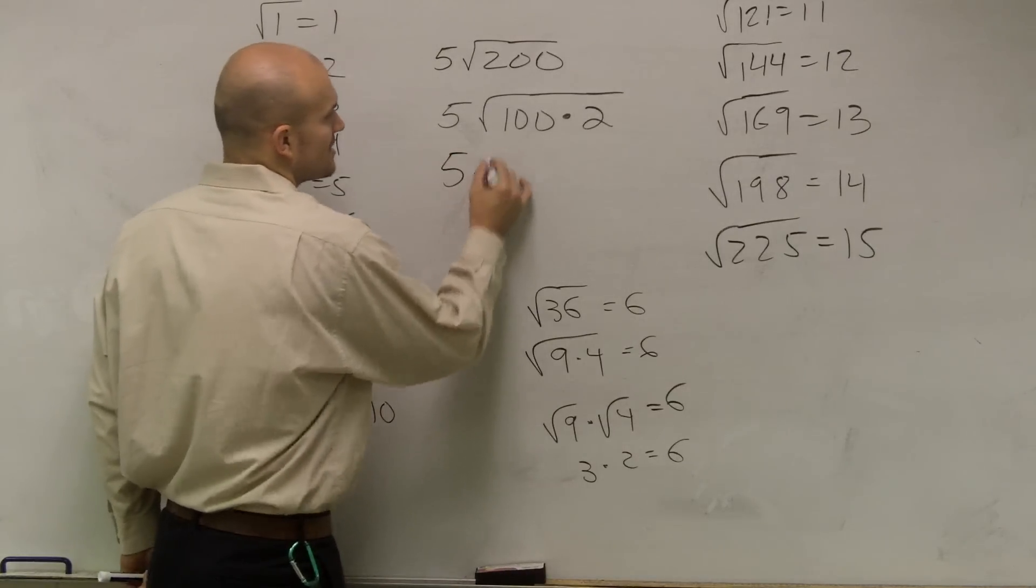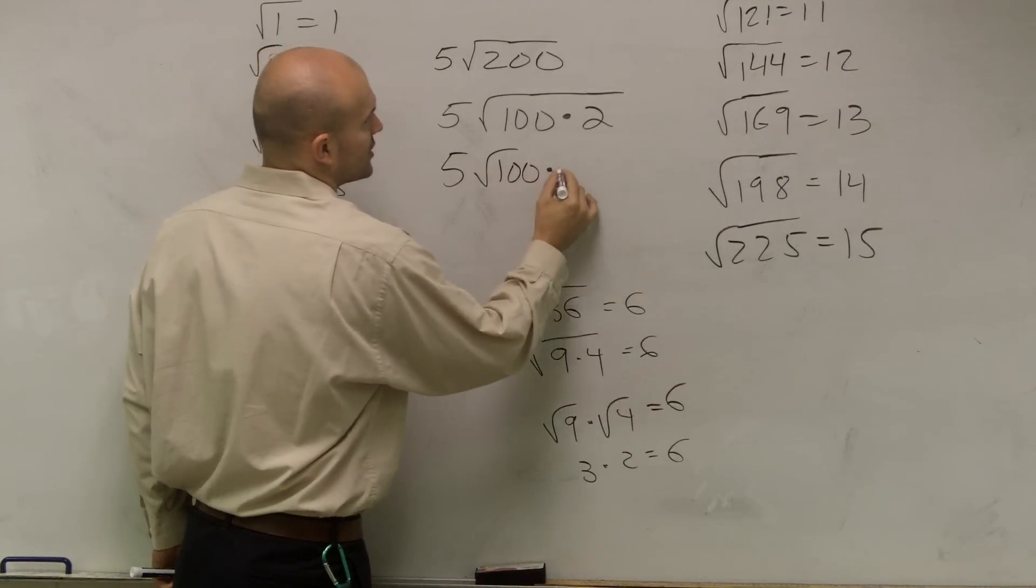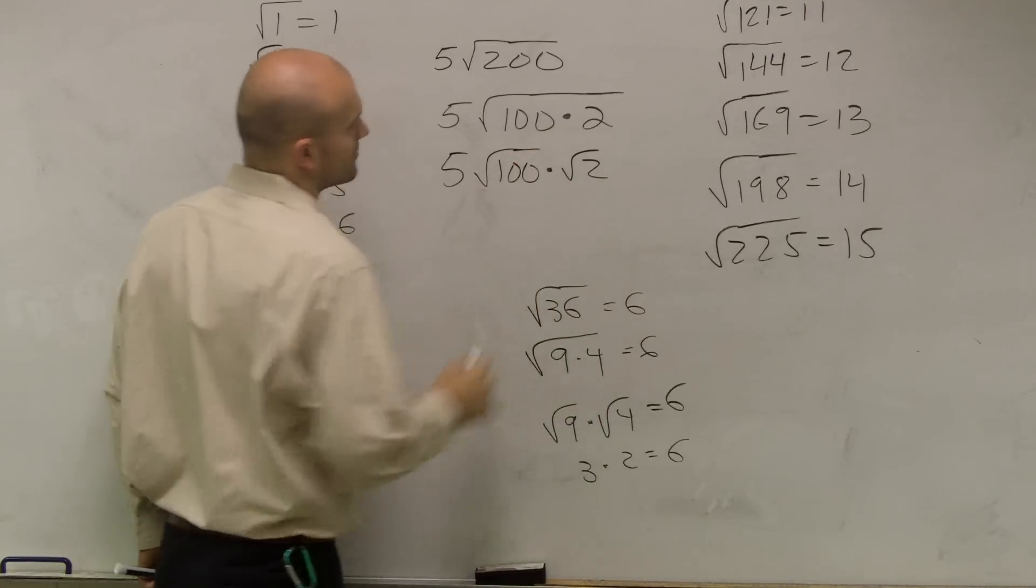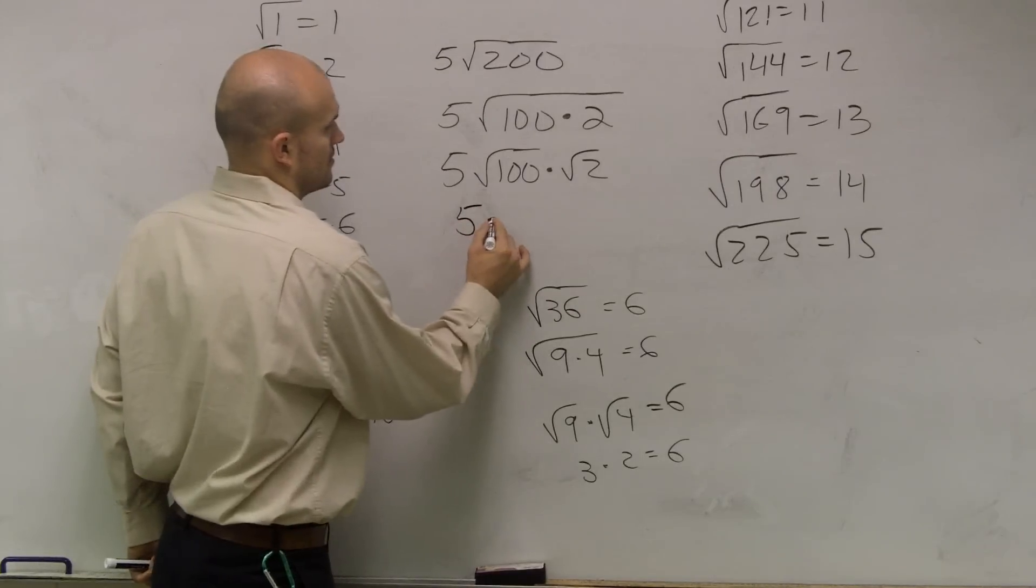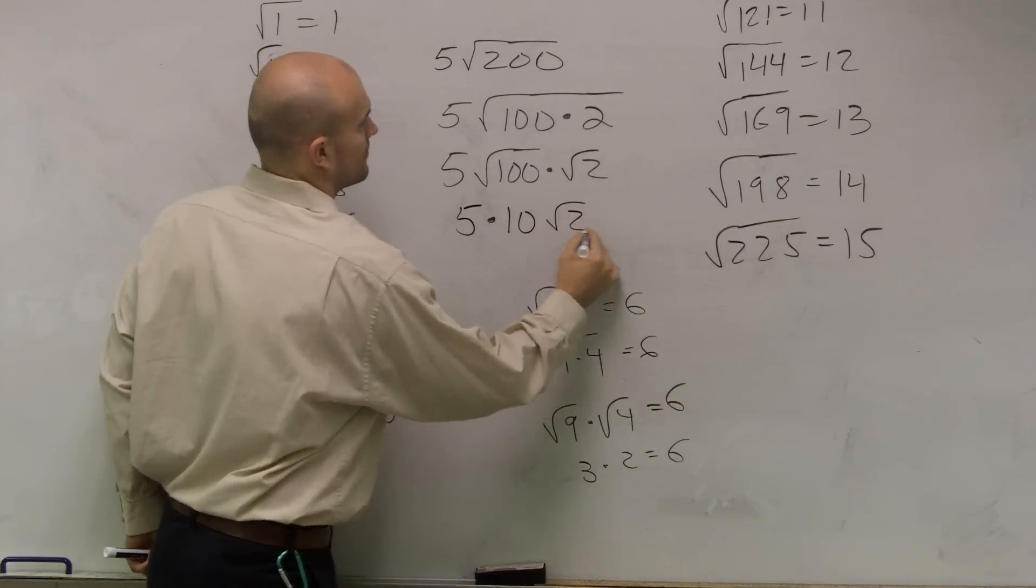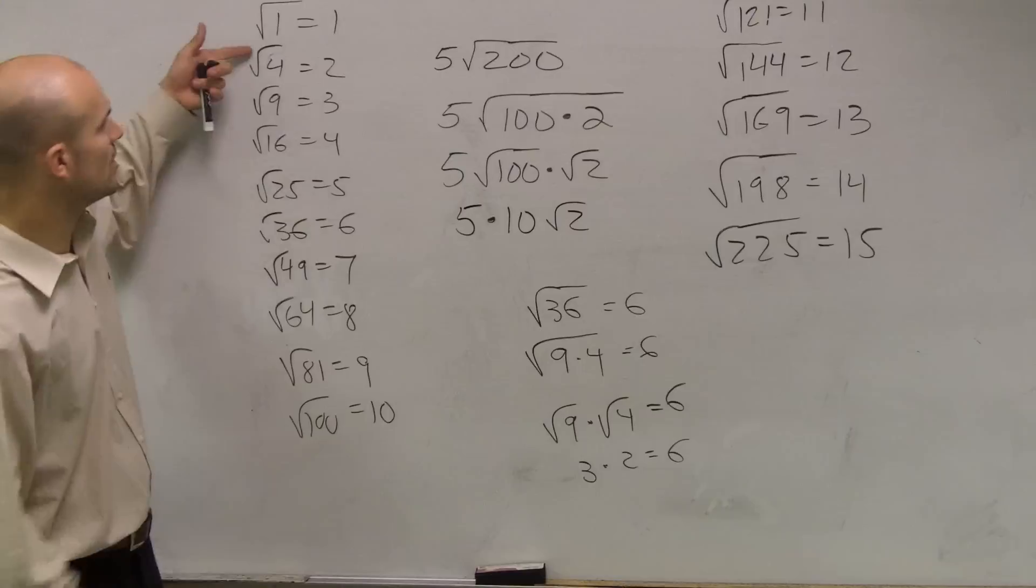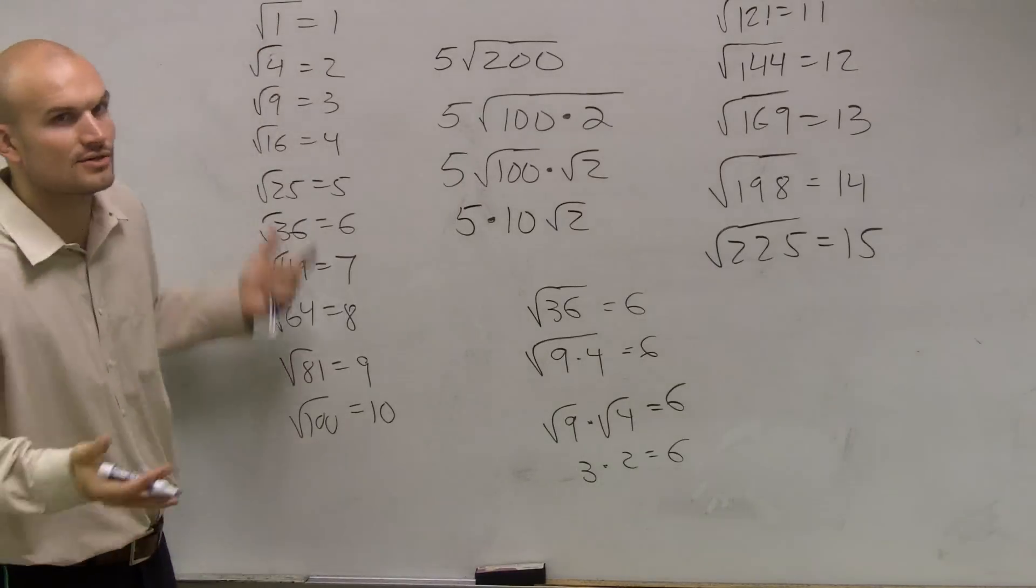Why is that important? Because I can break up the square root of 100 times the square root of 2. Do I know what the square root of 100 is? 10. Do I know what the square root of 2 is? No. It's somewhere in between 1 and 2, right? So we're just going to leave it there.